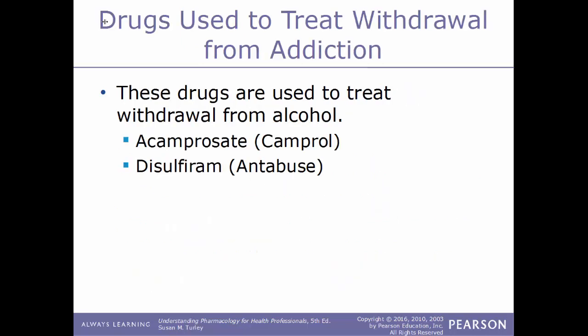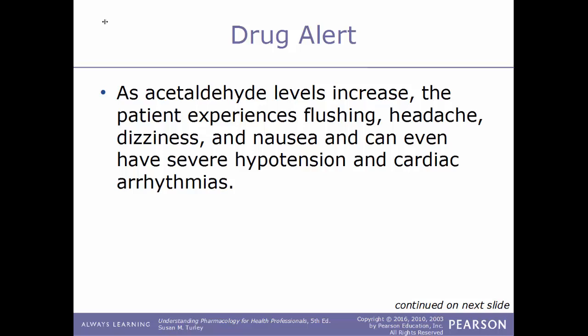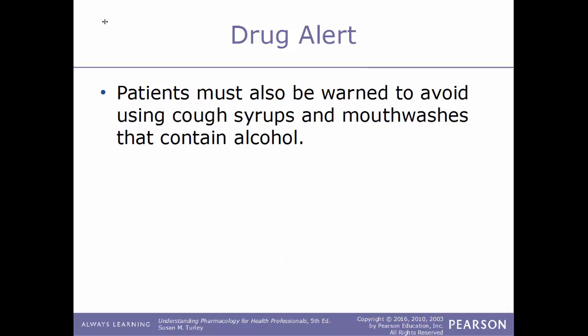Drugs used to treat withdrawal from alcohol include acamprosate (Campral) and disulfiram (Antabuse). Antabuse inhibits an enzyme that normally metabolizes a breakdown product of alcohol. If a patient drinks while taking this drug, alcohol is converted to acetaldehyde but cannot be further metabolized. As acetaldehyde levels increase, the patient experiences flushing, headaches, dizziness, nausea, and potentially severe hypotension and cardiac arrhythmias. These adverse reactions are intended to keep alcoholics from drinking. However, patients must first express a desire to remain sober, must be forewarned of these adverse effects and consent to treatment, and must also be warned to avoid cough syrups and mouthwashes containing alcohol.